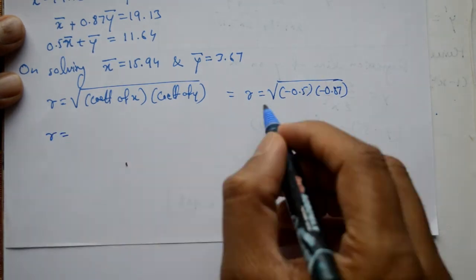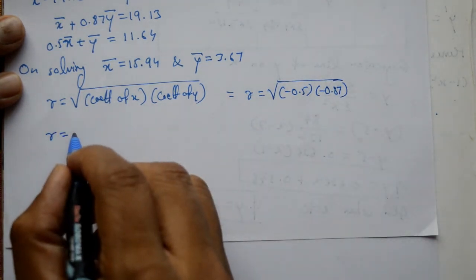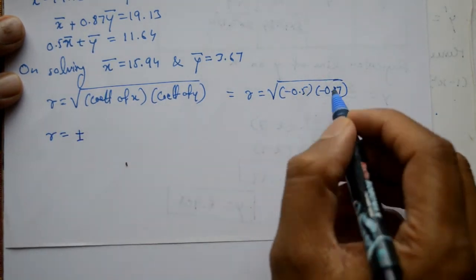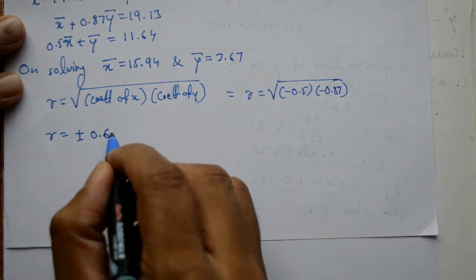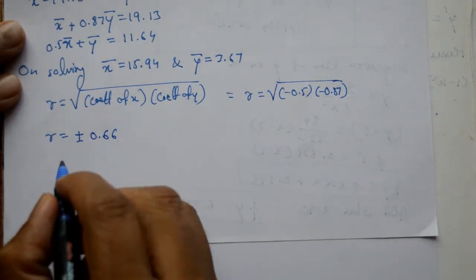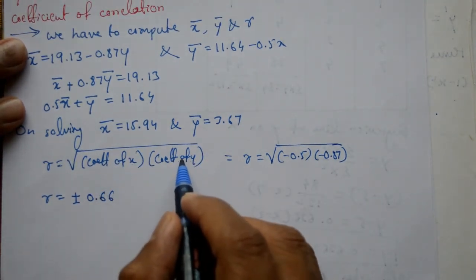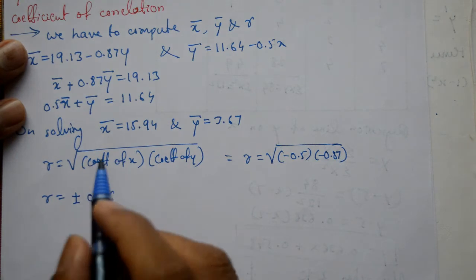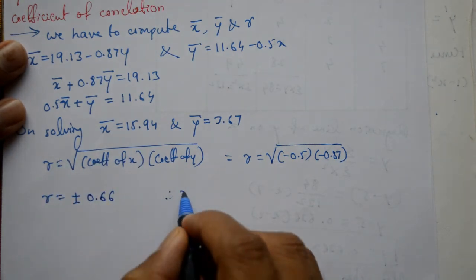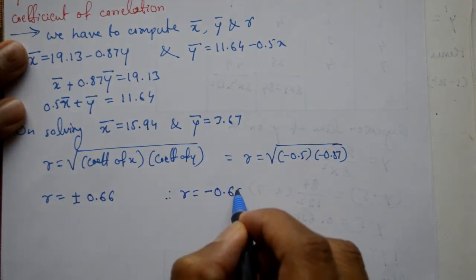That is r equal to plus or minus, you can use calculator for simple calculation, 0.66. Now see, the coefficient of x and coefficient of y both are negative, so we have to take the negative value. Therefore, r is equal to minus 0.66.